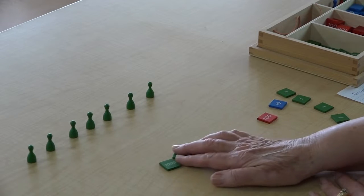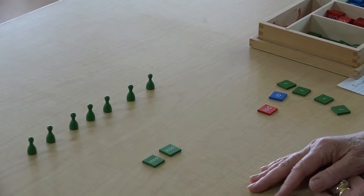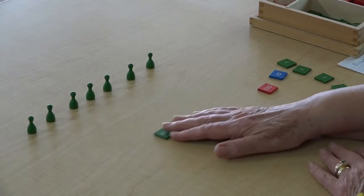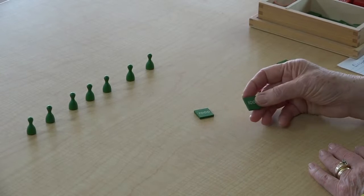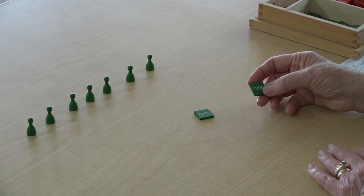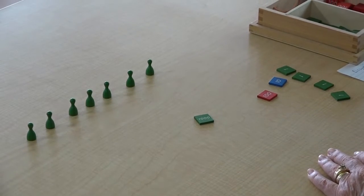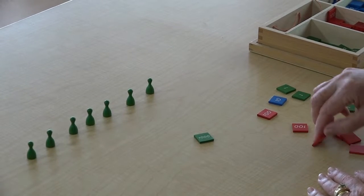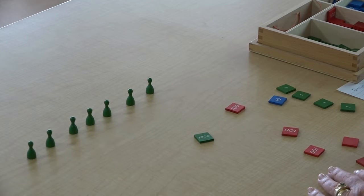So we have two thousands. Are we going to be able to share those equally? No, we can see that we can't. So we have to exchange. And 1,000 equals 10 hundreds. So let's get out 10 hundreds for the 1,000. Let's keep it separate from the one that's already there. 2, 4, 6, 8, 10.